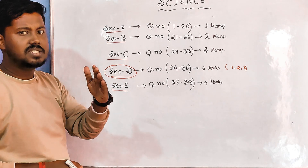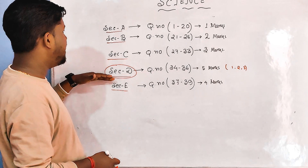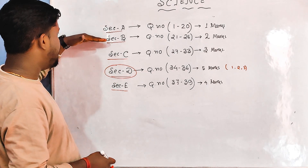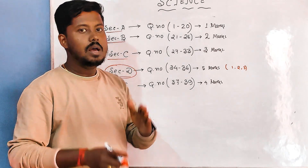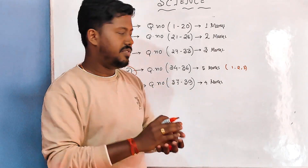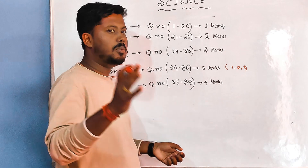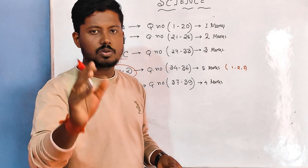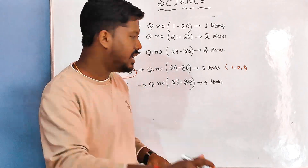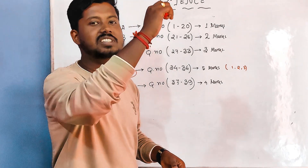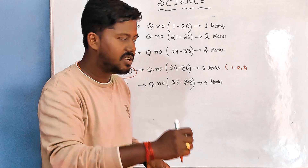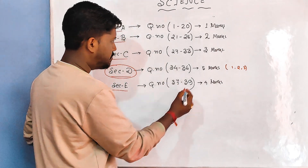After Section D, you have to start from Section A, or E, or B — maintain the sequence. After Section D, you start A, then B, then C, then E. No problem. But if you got three common questions from Section D, then start with Section D first.